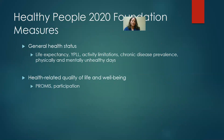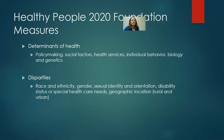There are also foundation measures, two of which relate to our topic today. The first is general health status, measured in a variety of ways: life expectancy, YPLL (years of potential life lost — life expectancy minus age at death), activity limitations, chronic disease prevalence, and physically and mentally unhealthy days. There's also health-related quality of life and wellbeing, measured primarily through the PROMIS system — patient-reported outcomes established as part of the Affordable Care Act. Participation is another measure used in Healthy People 2020. The other two foundation measures are determinants of health and disparities.